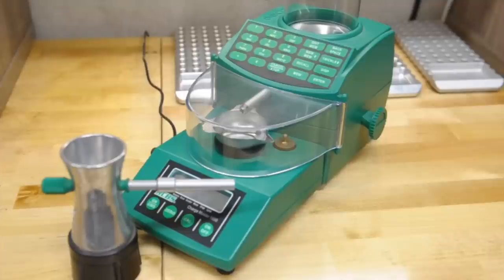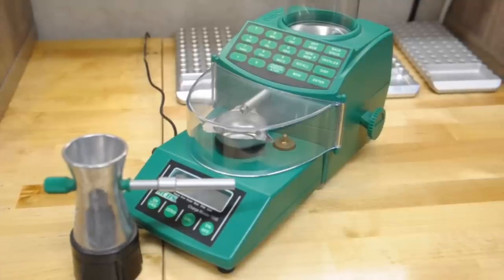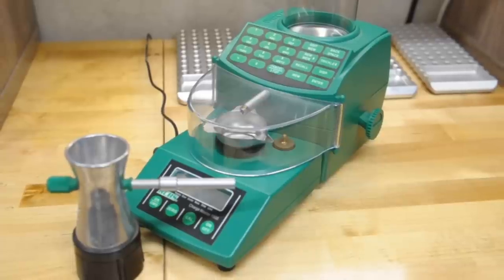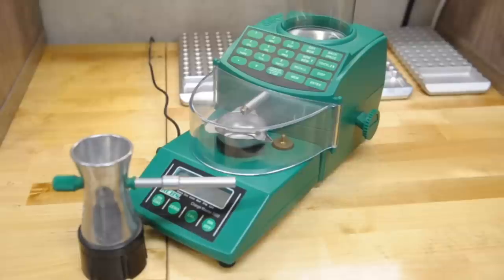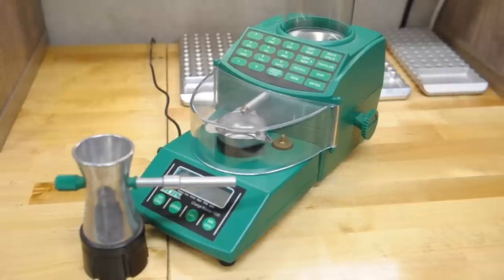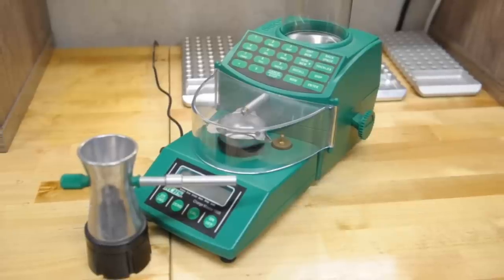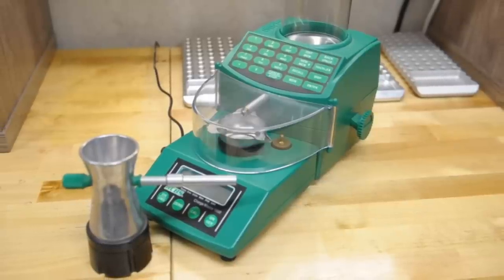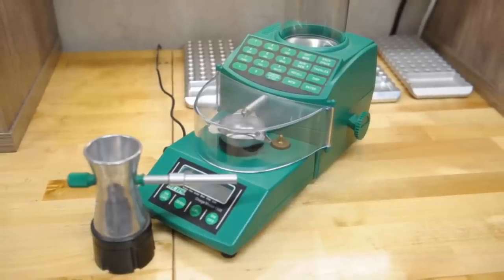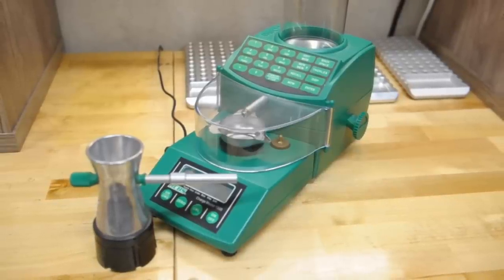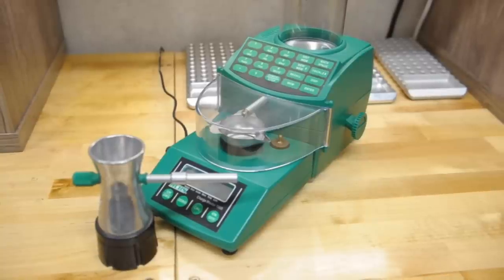I know guys that have a manual scale and actually still just use a trickler to manually get their charges onto their scale. This goes back to what I said in the beginning. It's all about how much money you have or how much time you have or how much you want to spend to save time. People give me crap for using the Chargemaster still with all of the other high end stuff that I have. But there's nothing wrong with it.